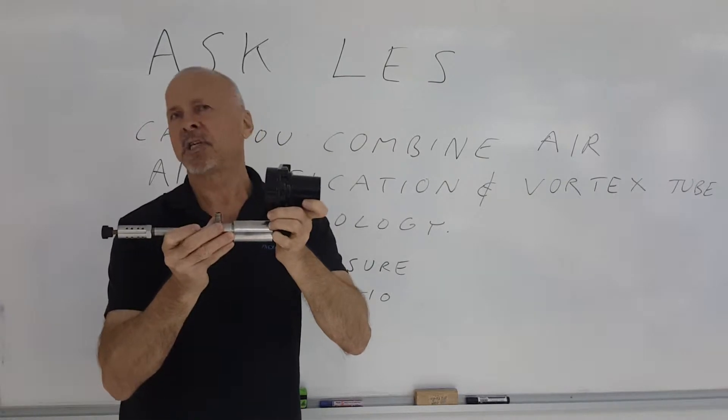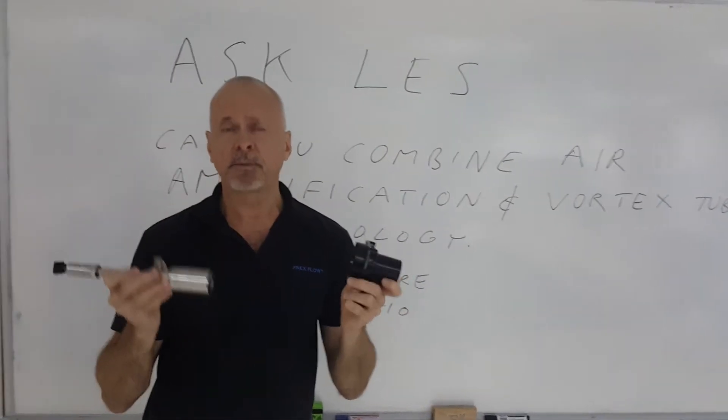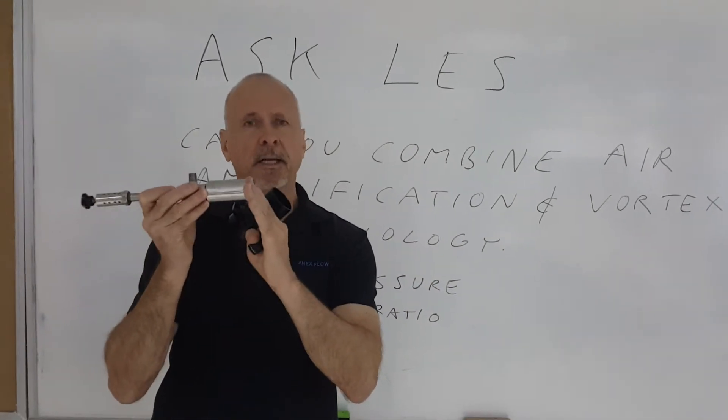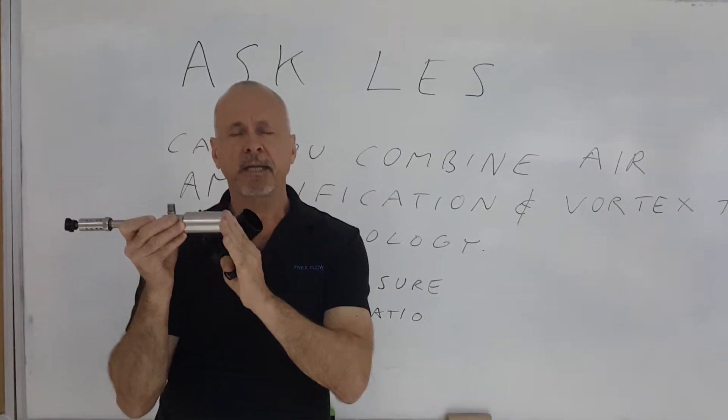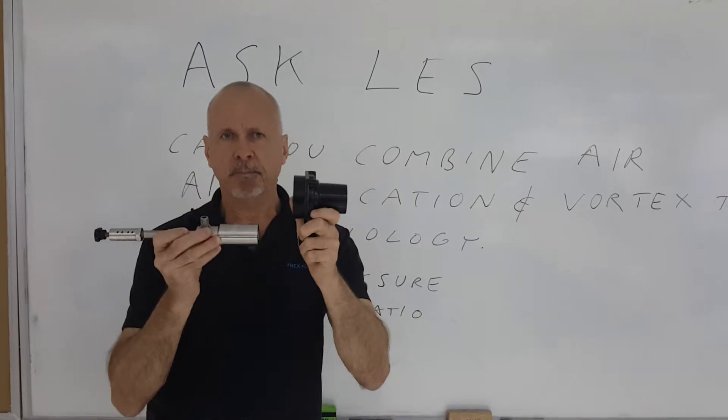Vortex tubes and amplifiers are highly subject to back pressure. For example, if I plug that end of the vortex tube, it's going to push the air back out the other side and it will simply not work. So you cannot put it in line with the amplifier.